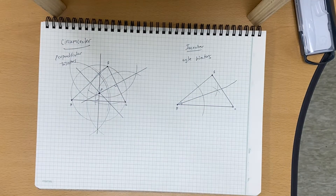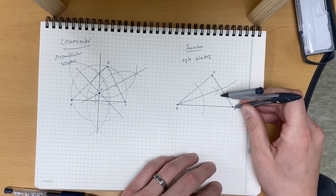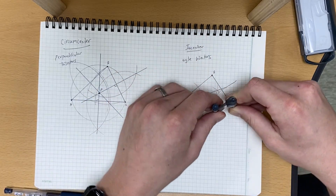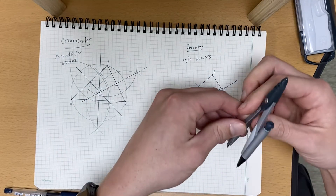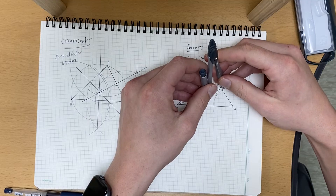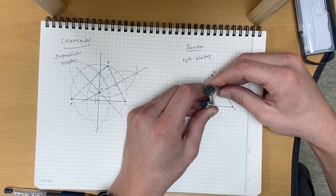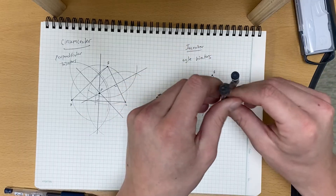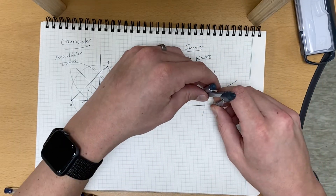There's my angle bisector for angle A. Now let's bisect angle C — we want to draw another angle bisector. There's our arc that intersects both sides. Now put our compass needle at this distance and draw a couple of arcs out here.